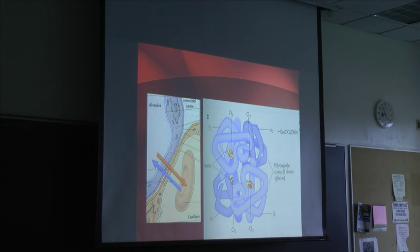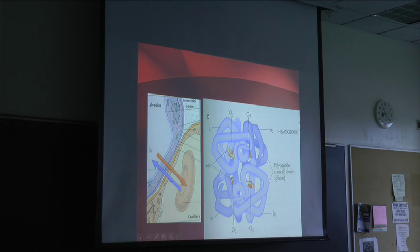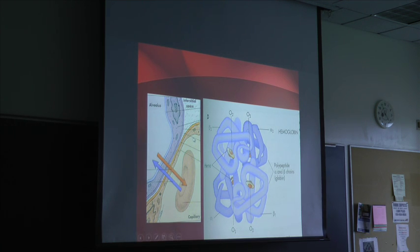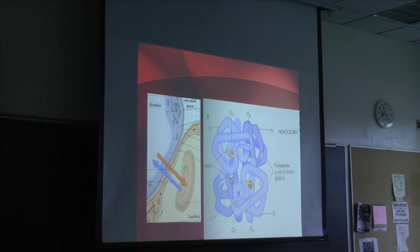Looking at some pictures: on the left, this donut-shaped object is a red blood cell inside a capillary, next to an alveolus. It's showing oxygen coming into the red blood cell and carbon dioxide leaving. Inside the red blood cell you can see the hemoglobin molecule. Four oxygen molecules can travel on one hemoglobin molecule — showing the efficiency with which hemoglobin carries oxygen.